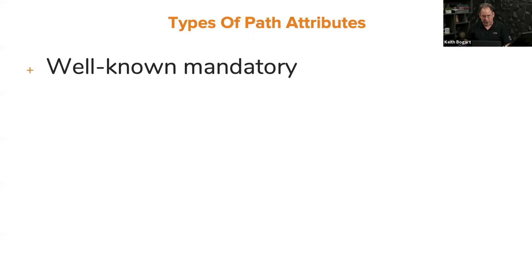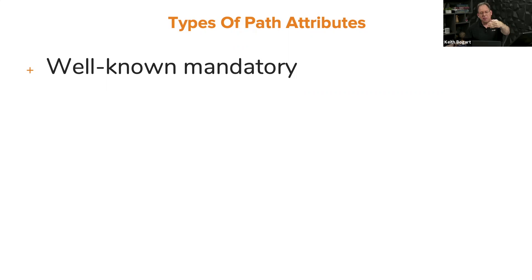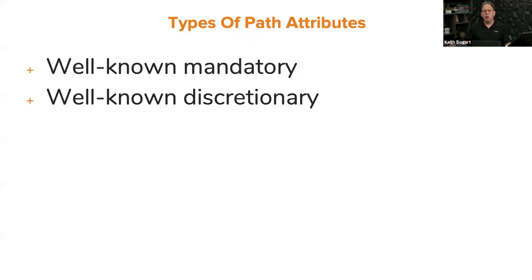Well-known mandatory attributes are defined in an RFC, clearly part of basic BGP code. Mandatory means a router must include these in every BGP update — there are only three: next hop, AS path, and origin code. Every BGP speaker regardless of vendor will understand these. Then we have well-known discretionary — every device understands these, but it's discretionary as a network administrator whether you want to use them; you might not have any use for a particular one.